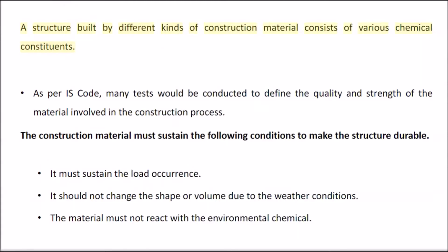A structure built by different kinds of construction materials consists of various chemical constituents. As per IS code, many tests are conducted to define the quality and strength of the material involved in the construction process. The construction material must sustain load occurrence, must not change shape or volume due to weather conditions, and must not react with environmental chemicals.